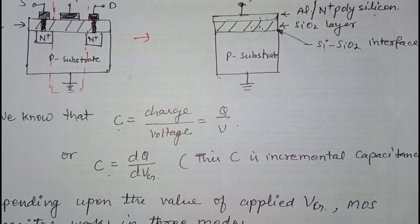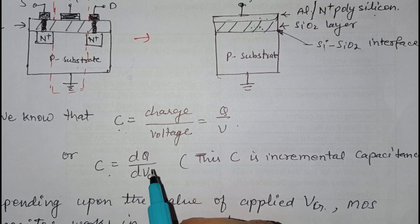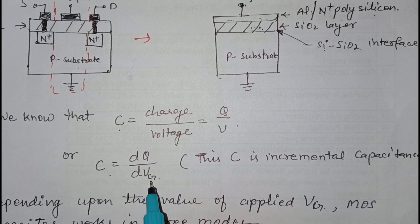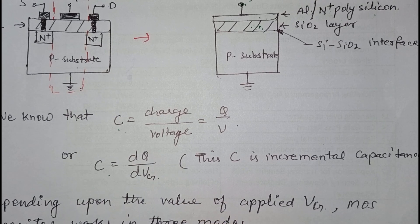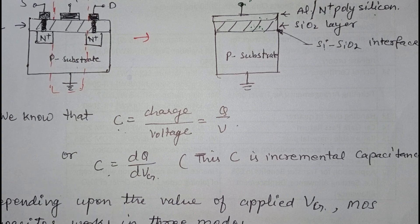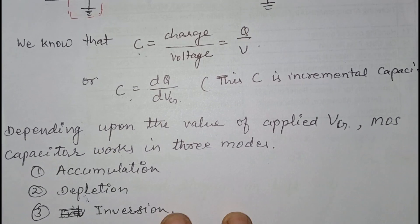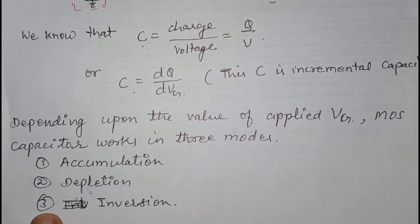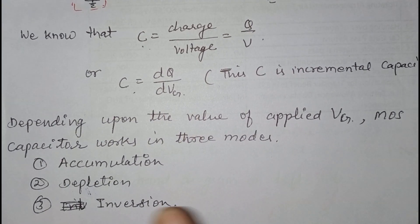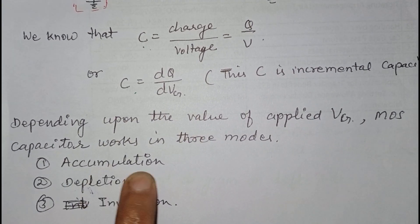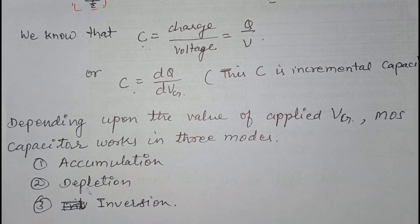The incremental capacitance is given by the charge that occurs due to the change in the voltage applied at the gate. Now, depending upon the voltage that we apply at the gate, the MOS capacitor works in three modes: accumulation mode, depletion mode, and inversion mode.